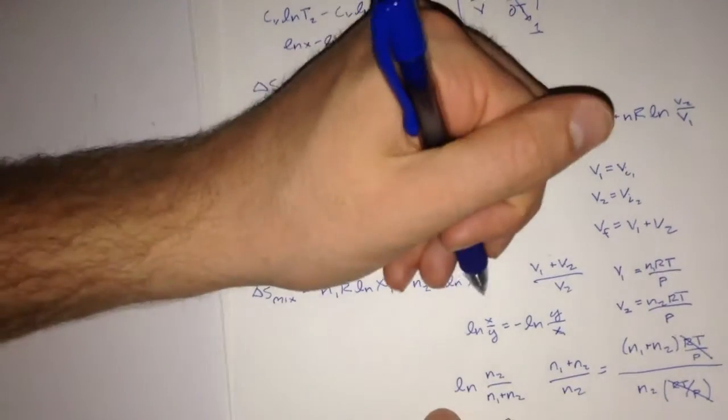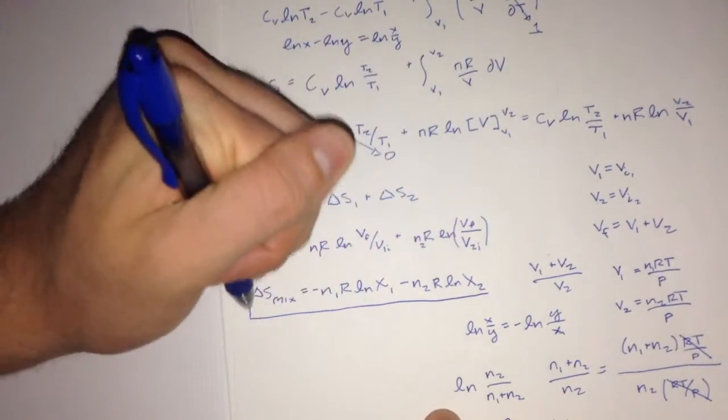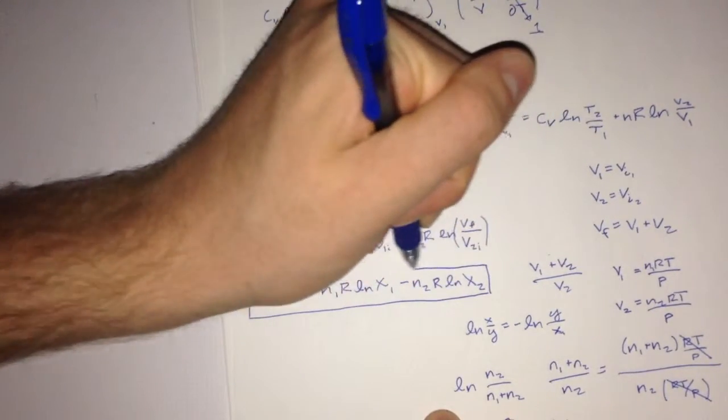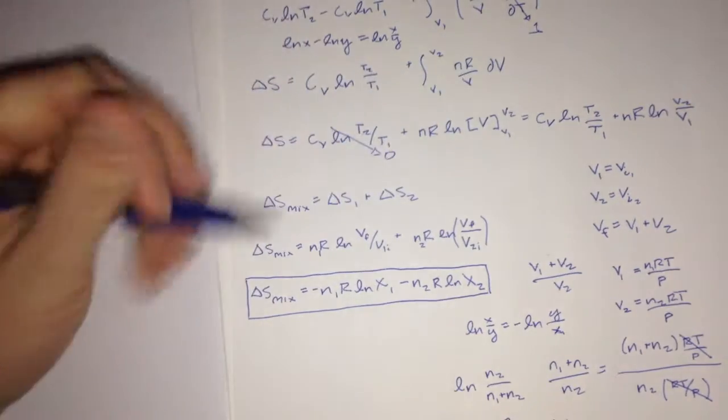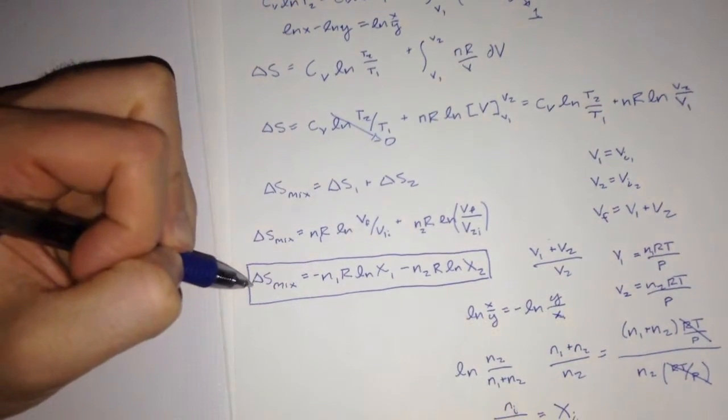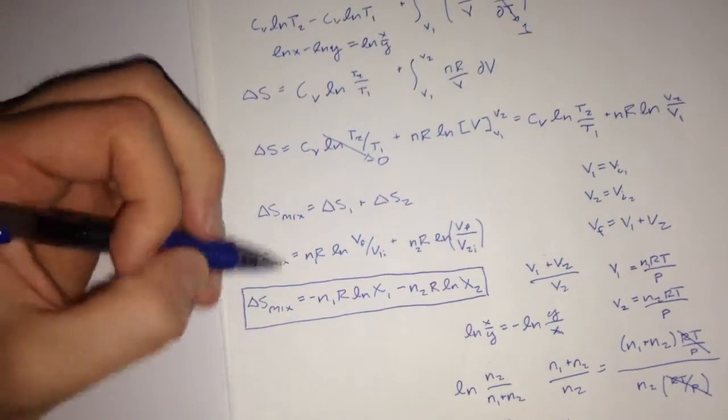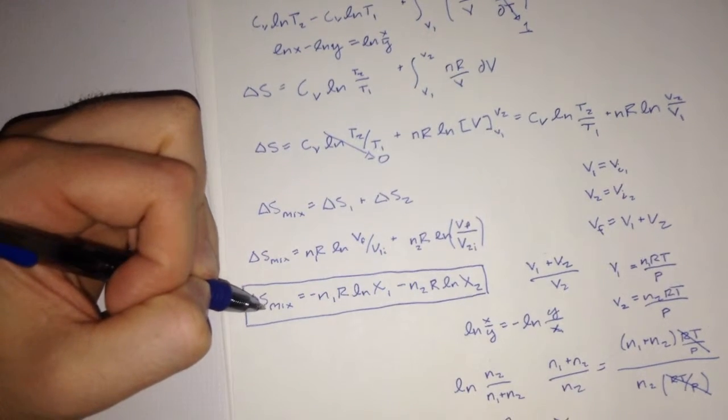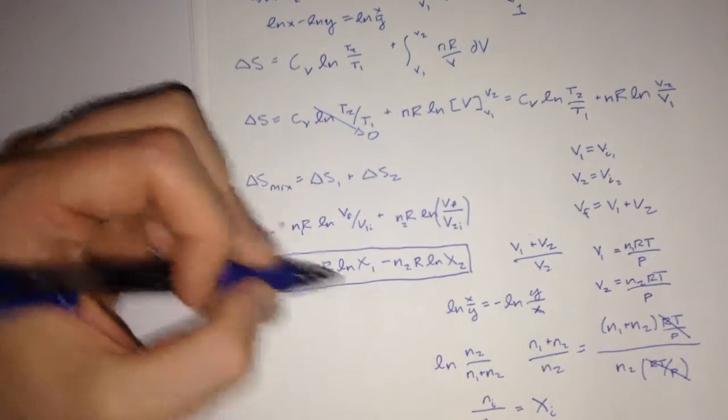So that gives us our answer in a discrete form, where we only have to know the number of moles to find the change in entropy for mixing. Another thing important to notice is by definition, the mole fraction is always going to be less than 1.